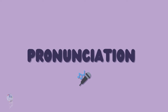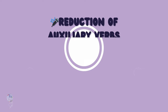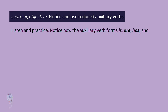Pronunciation. Reduction of auxiliary verbs. Listen and practice. Notice how the auxiliary verb forms is, are, has, and have are reduced in conversation.